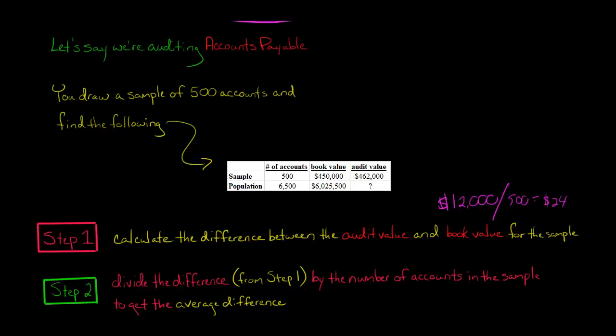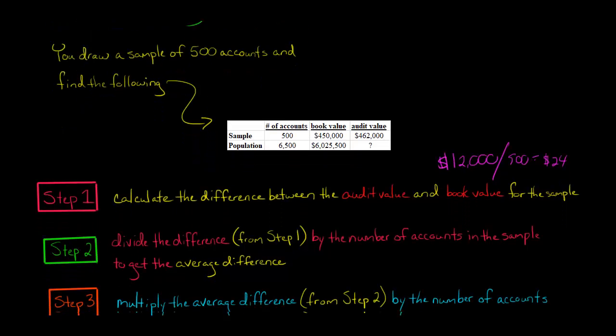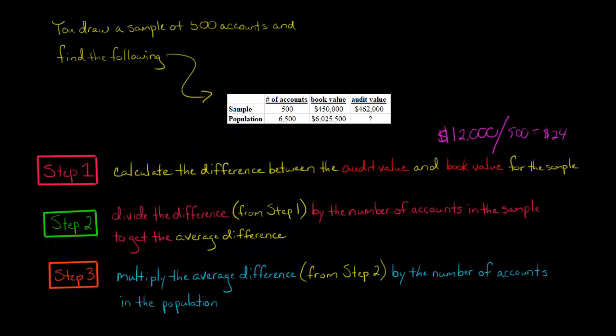So now we have $24, but we're not done. In step three, we're going to take that number, the $24, and multiply it by the number of accounts in the population. This is our average difference for the sample, but now we're going to multiply it by the number of accounts in the population.